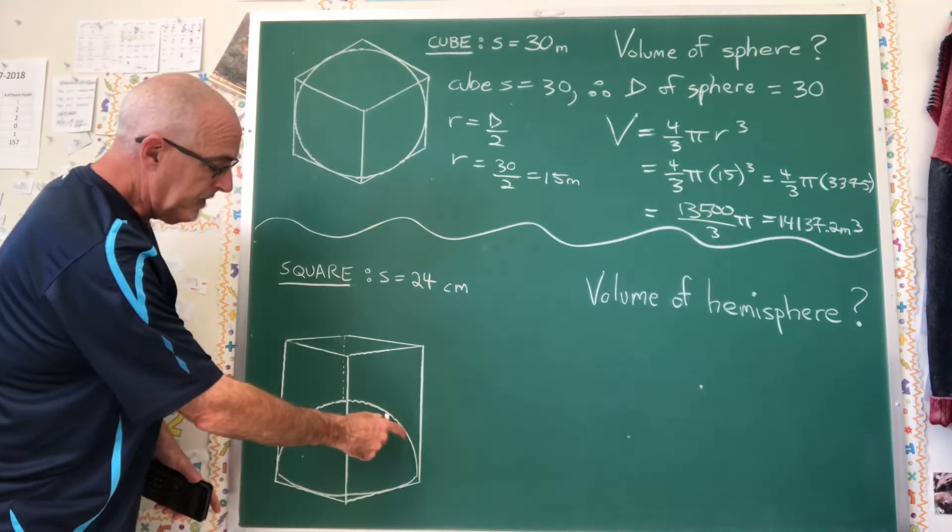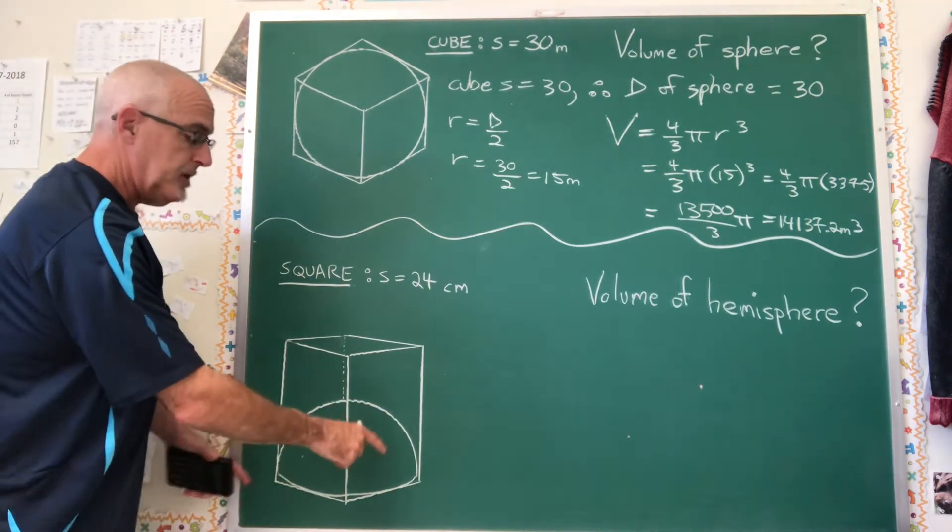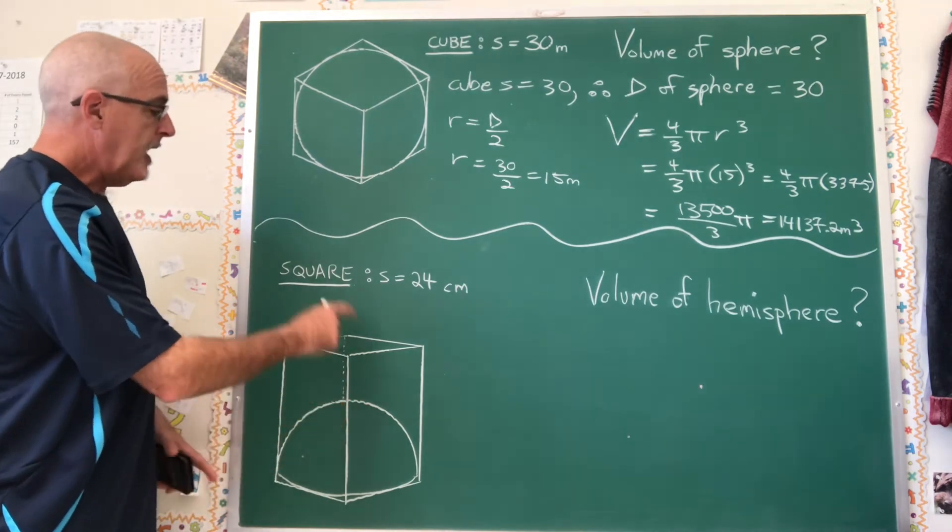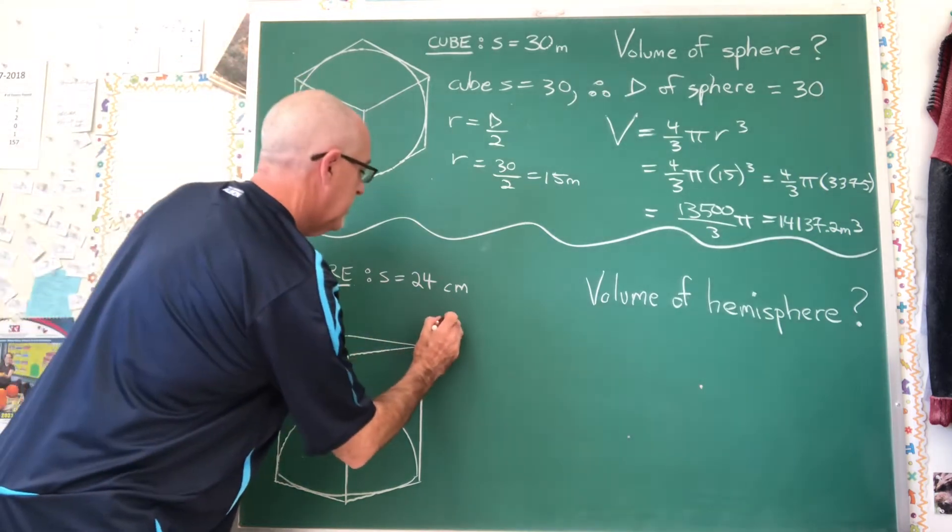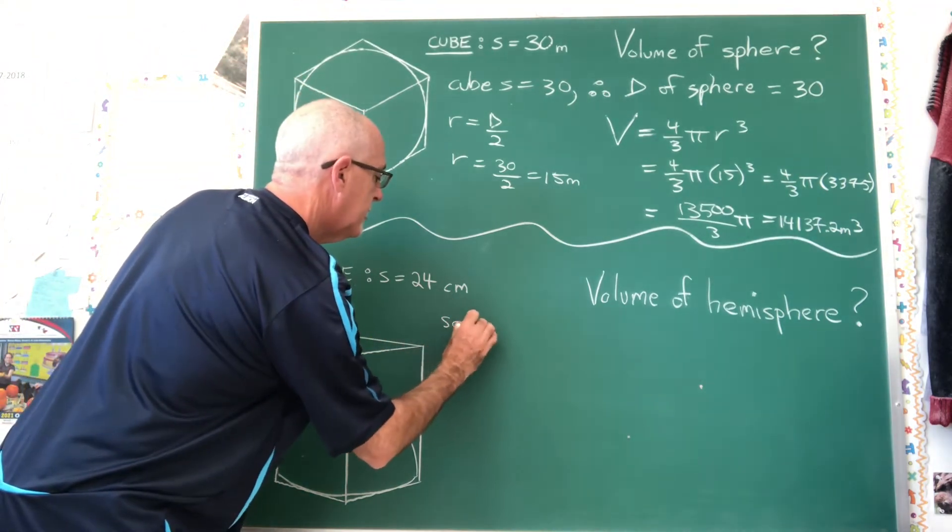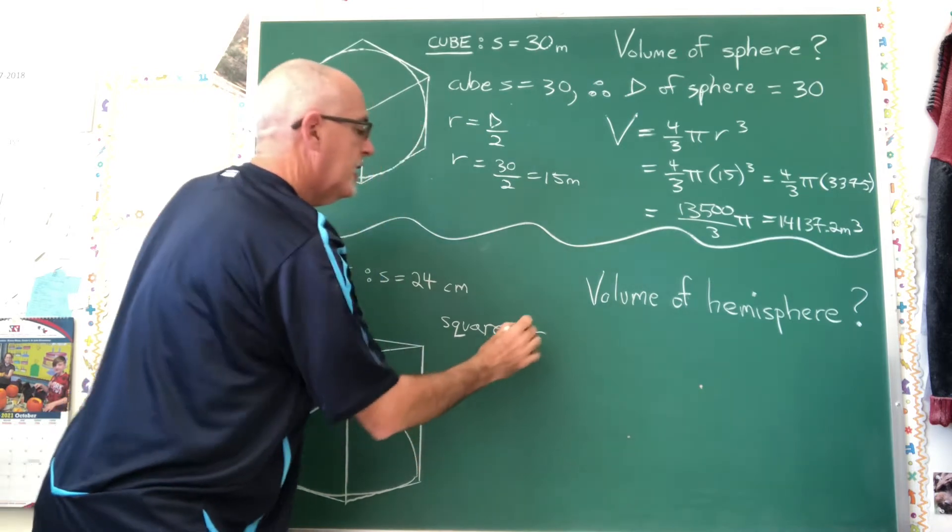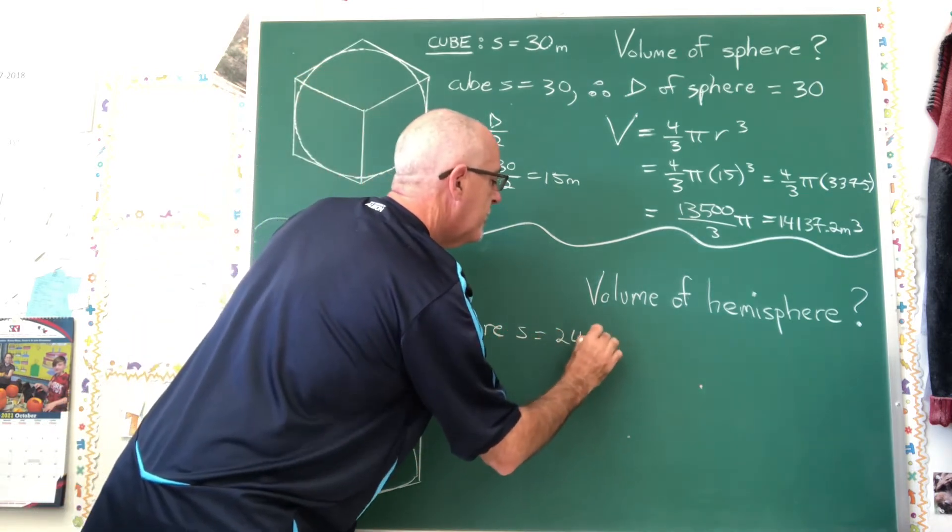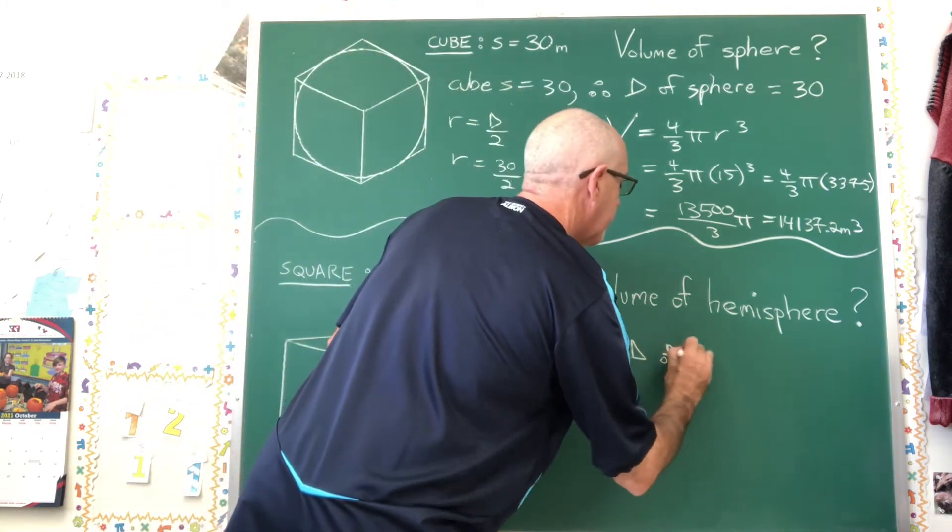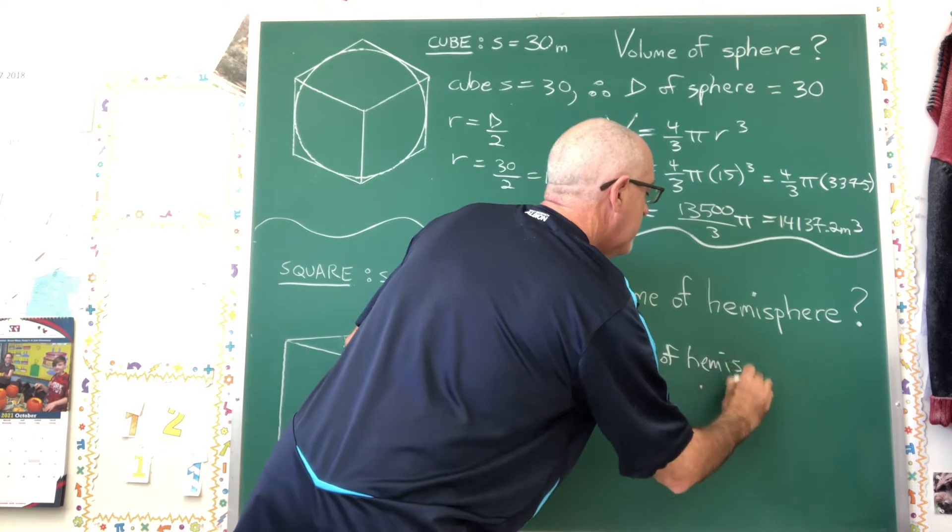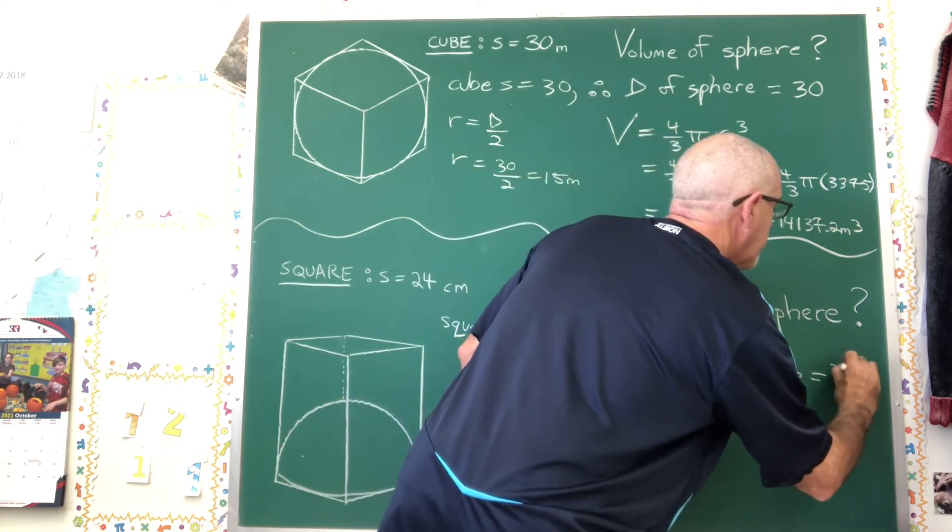The equator of the hemisphere is just barely fitting inside the right prism and its base is a square. So therefore, if the square's side length is 24, the diameter of the hemisphere is also 24.